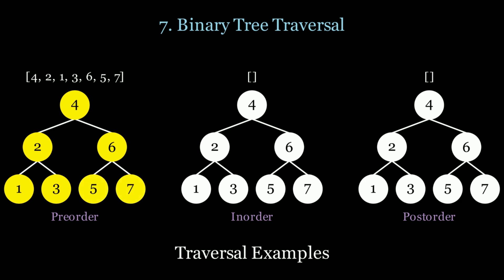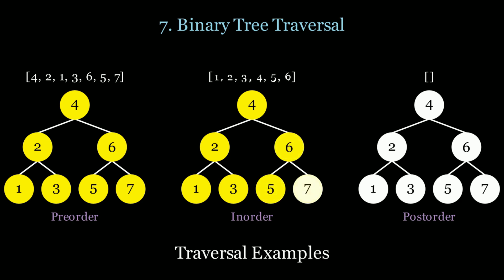In the in-order traversal, we scan the leftmost child, then the current node, and then the right child. That's going to be 1, 2, 3, 4, 5, 6, and 7.